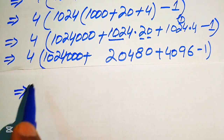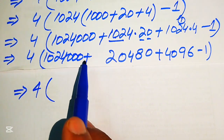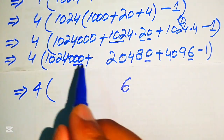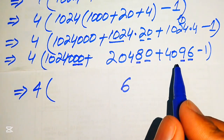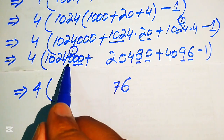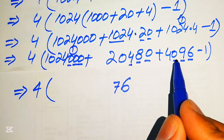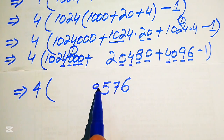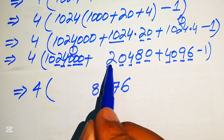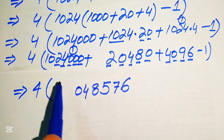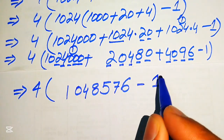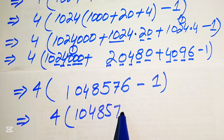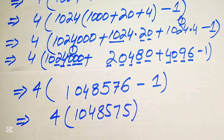Now we sum all three values. Adding the columns: 0 plus 0 plus 6 is 6; 0 plus 8 is 8; 8 plus 9 is 17 write 7 carry 1; 0 plus 4 is 4, 4 plus 0 is 4, 4 plus 1 is 5; 4 plus 0 is 4, 4 plus 4 is 8; 2 plus 2 is 4; and we get 1048576. Subtracting 1 gives 1048575, so we have 4 multiplied by 1048575.